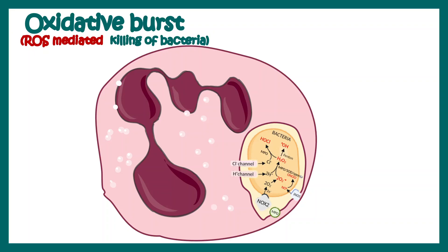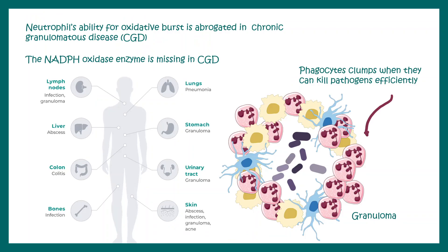Neutrophils are super important for the body. In diseases like chronic granulomatous disease (CGD), there is granuloma formation. In CGD, neutrophils lack the enzyme NADPH oxidase. In the absence of this enzyme, ROS production is abrogated, and the pathogen-killing efficiency of neutrophils and other phagocytes is decreased. This causes cells to cluster around pathogens, forming granulomas, illustrating why neutrophil function is clinically critical.